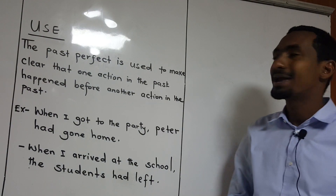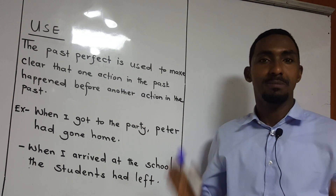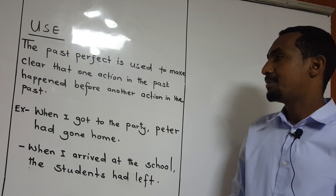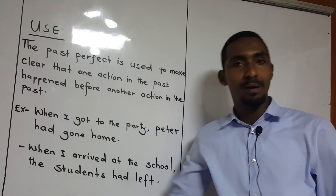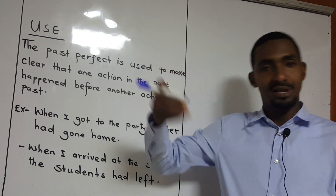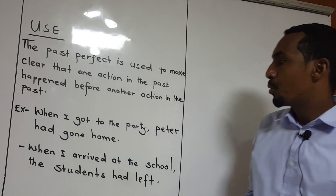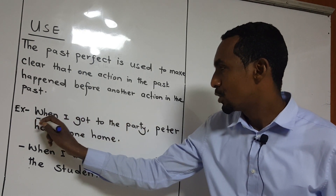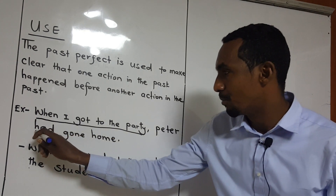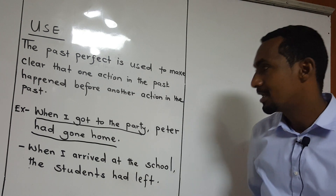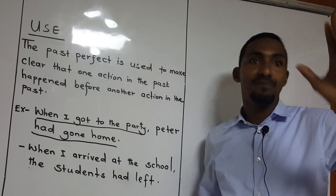Let's move to the uses of the past perfect. The past perfect is used to make clear that one action in the past happened before another action in the past. Let us see this example: when I got to the party, Bita had gone home. So it means that Bita left before I arrived.